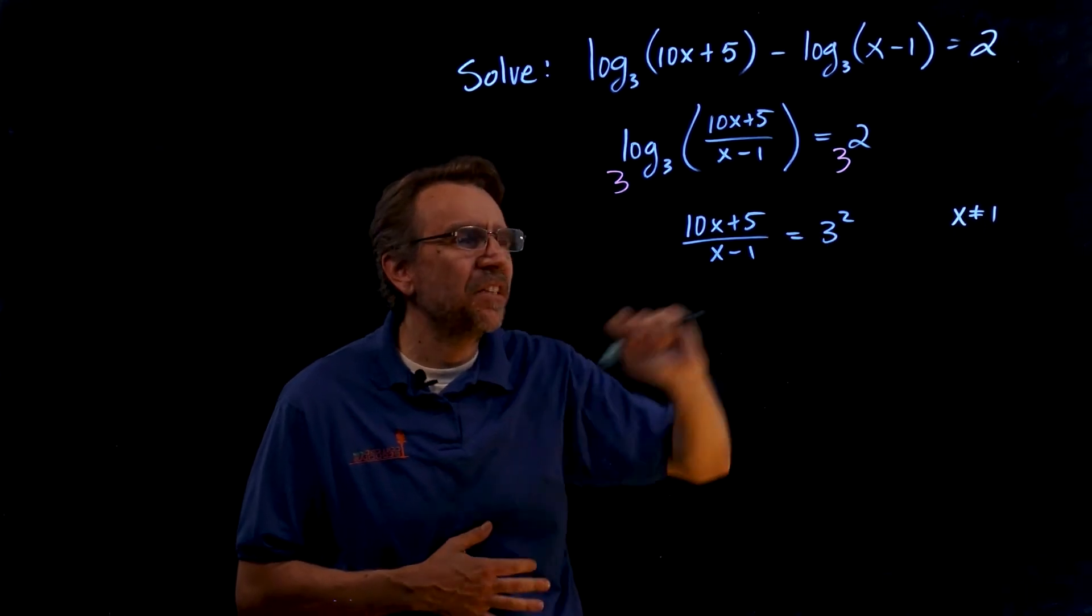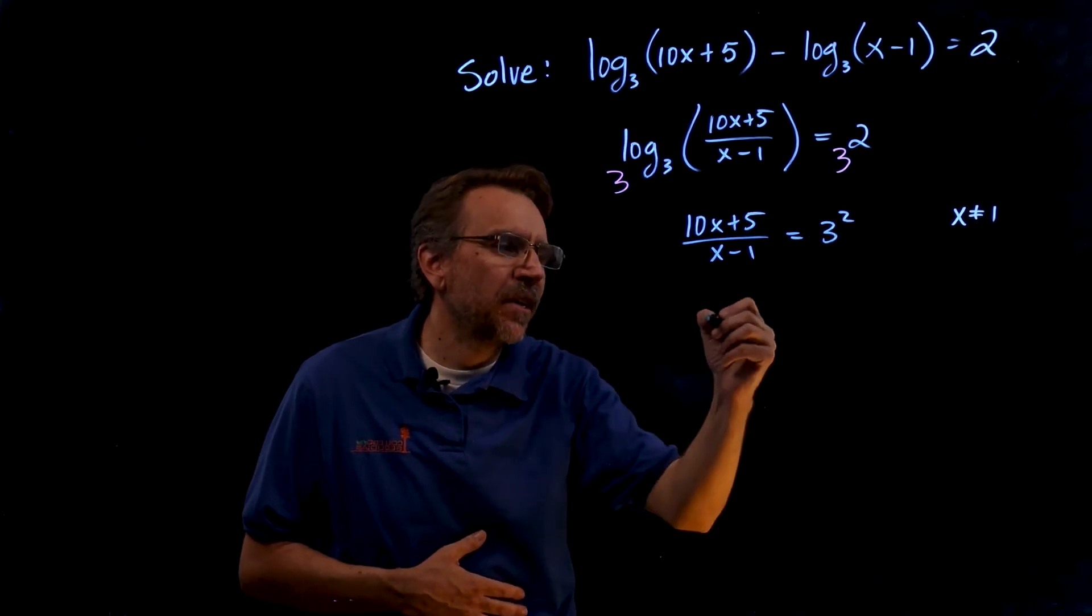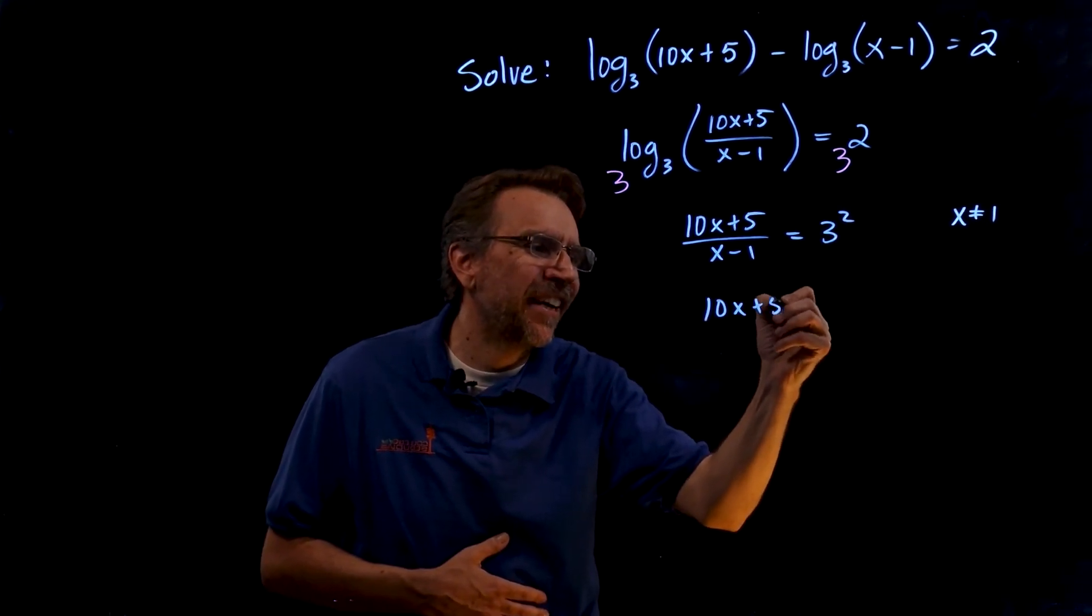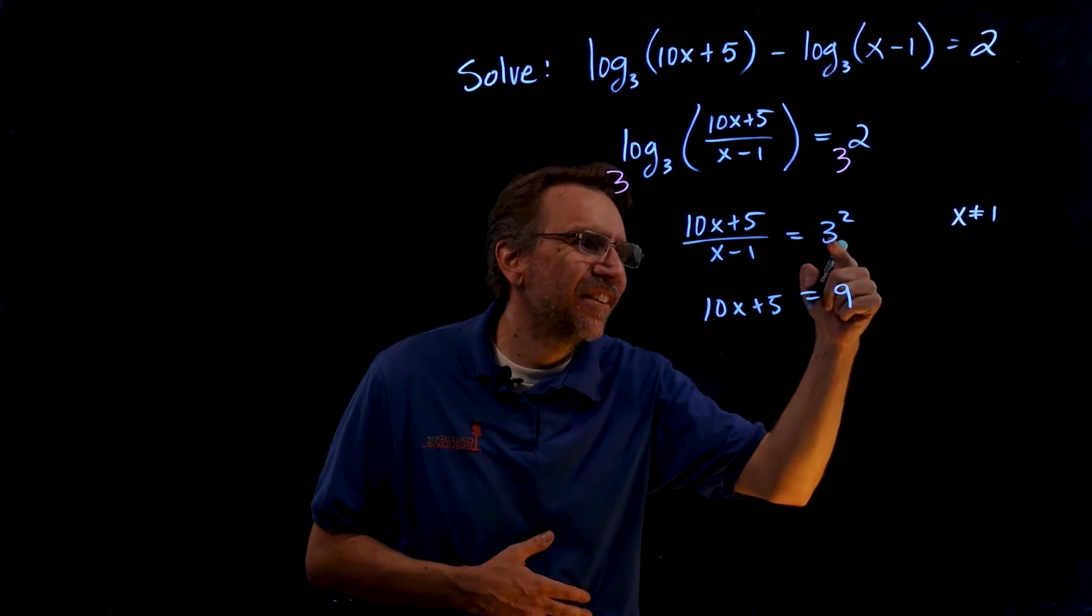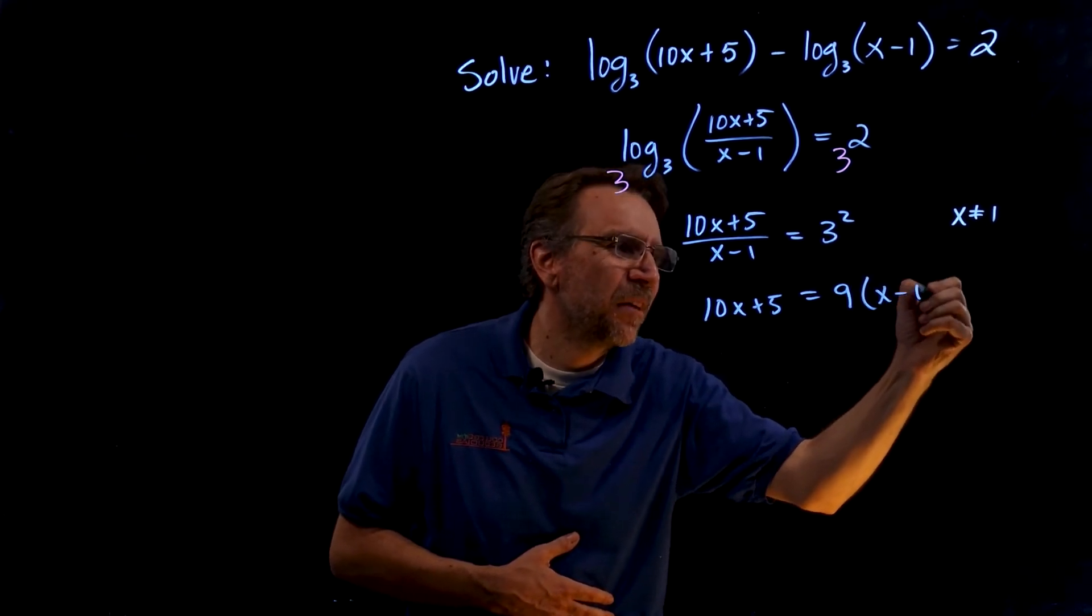In this case I'm just going to continue solving, so this is equal to, I'm going to cross multiply, so we get 10x plus 5 equals 9, 3 squared is just 9, times x minus 1.